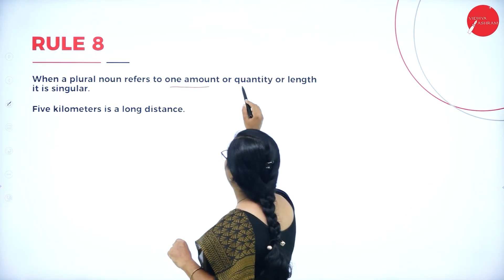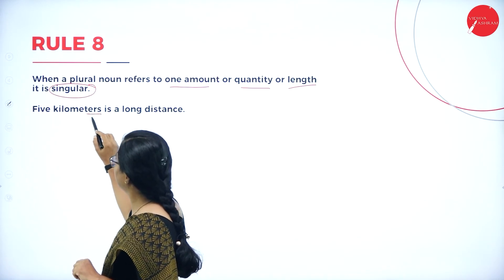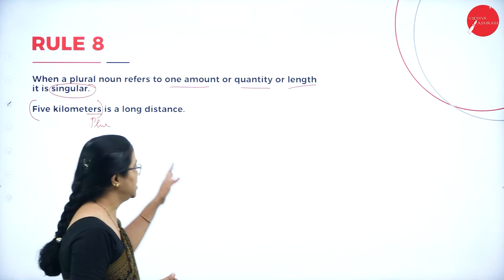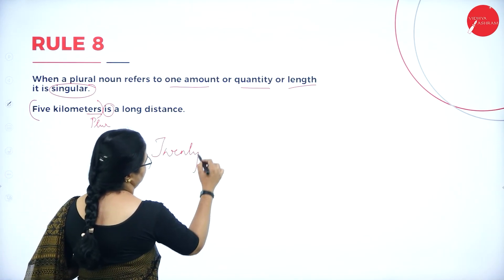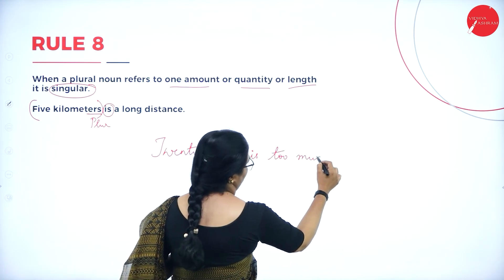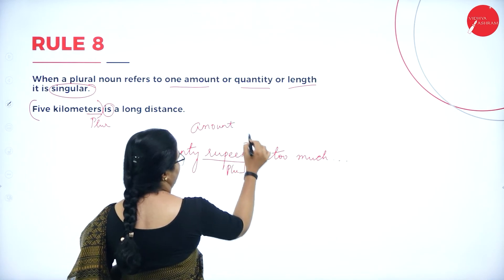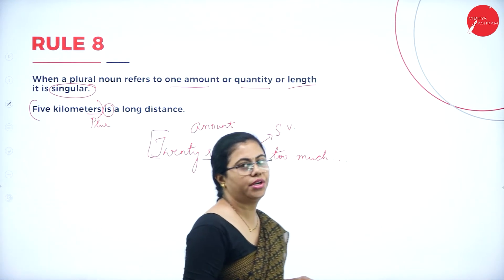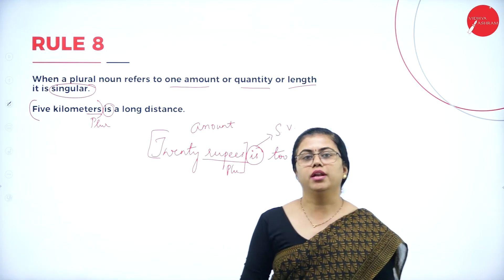Rule 8: When a plural noun refers to one amount, quantity, or length, it is treated as singular. For example: 'Five kilometers is a distance' — though 'kilometers' is plural, it refers to one length, so we use a singular verb. Similarly, '20 rupees is too much for this article' — we treat '20 rupees' as an amount. Whenever it is a length, quantity, or measurement, use a singular verb.